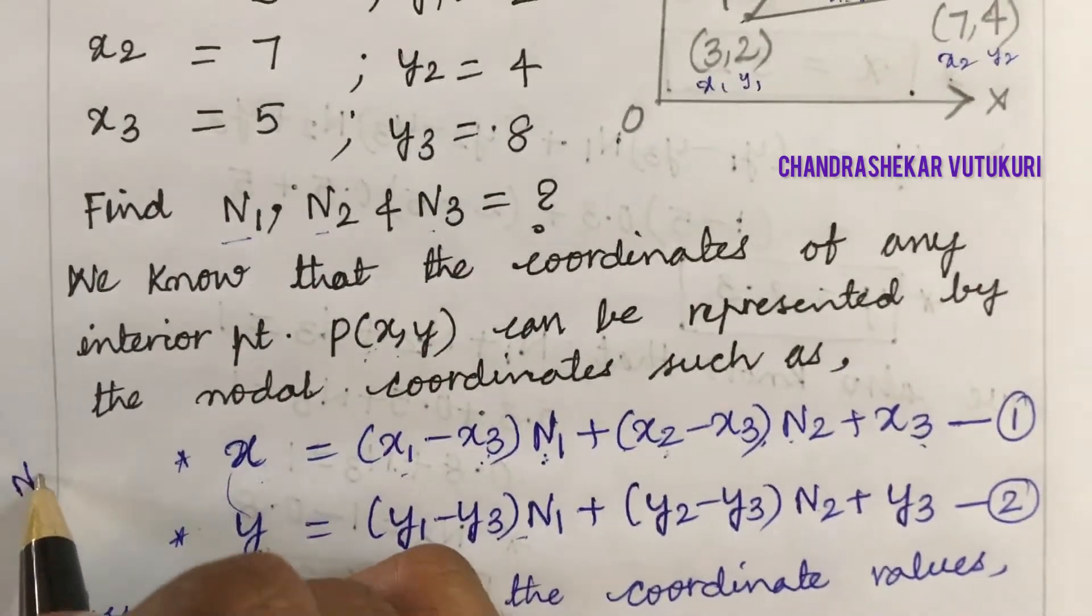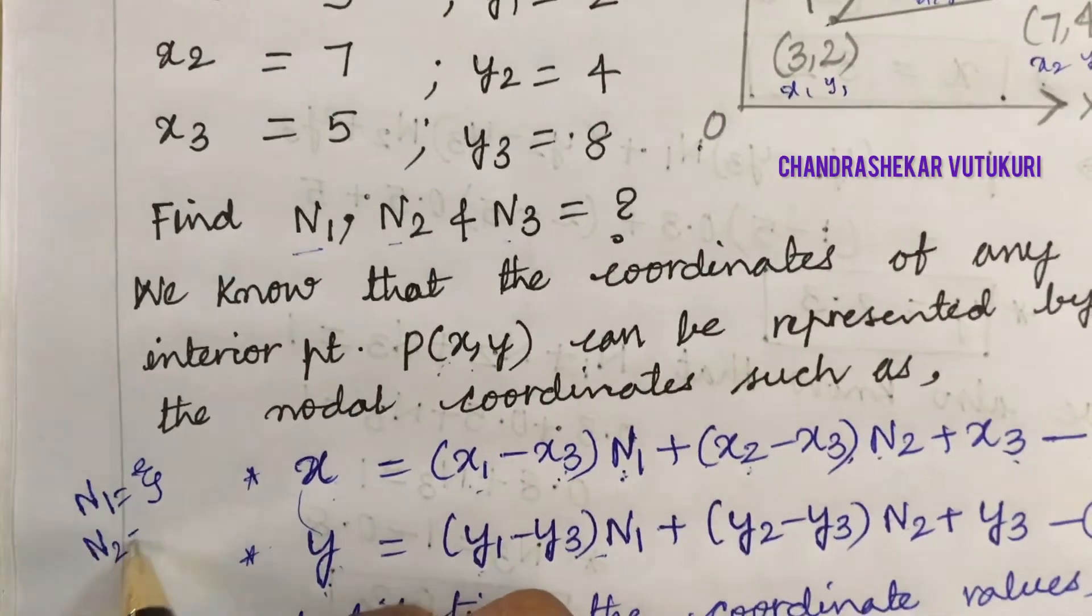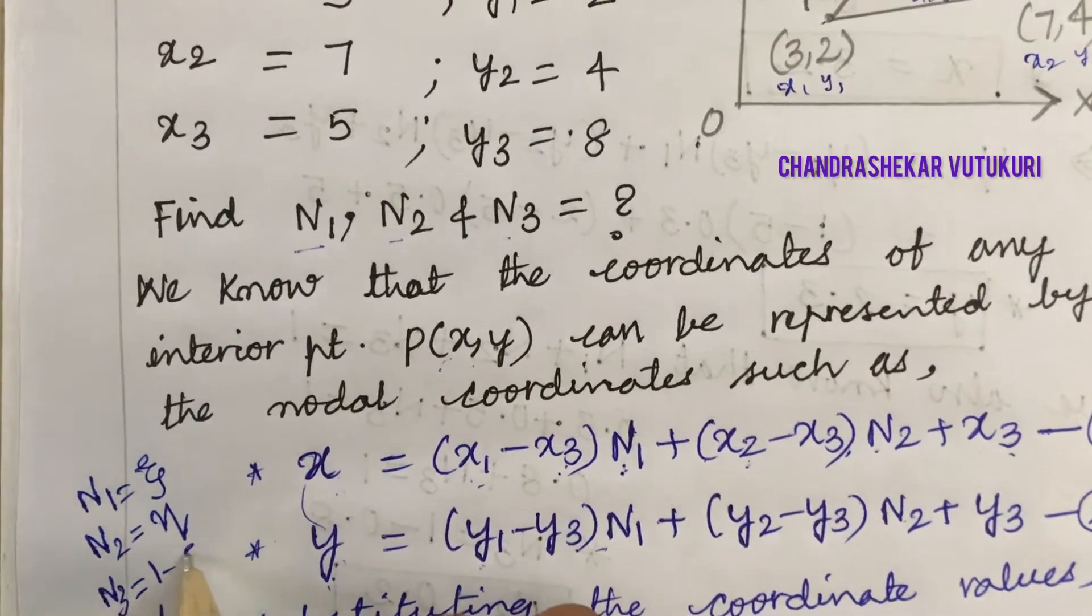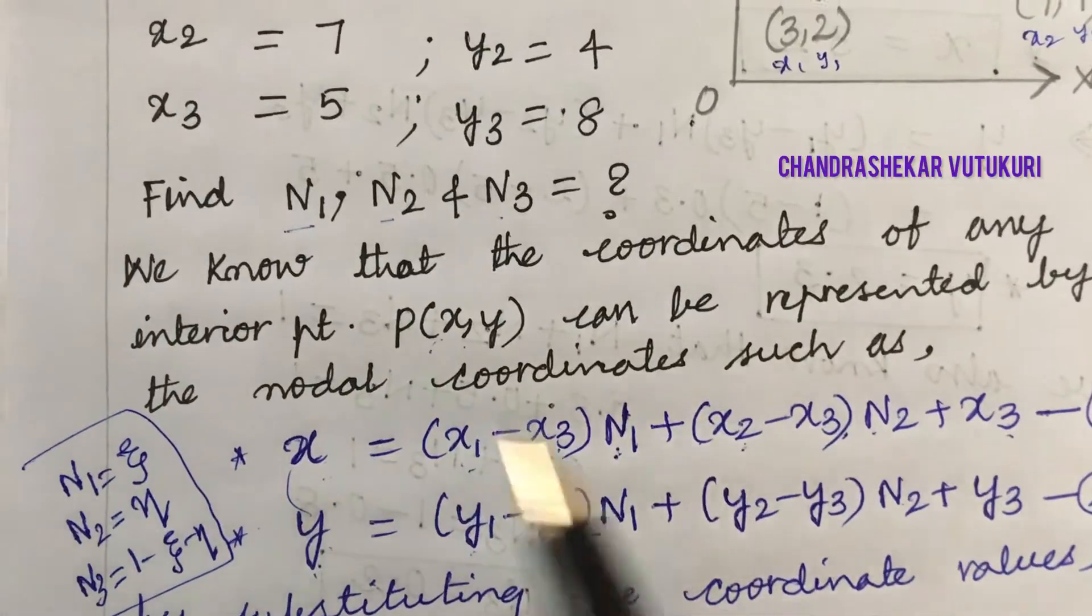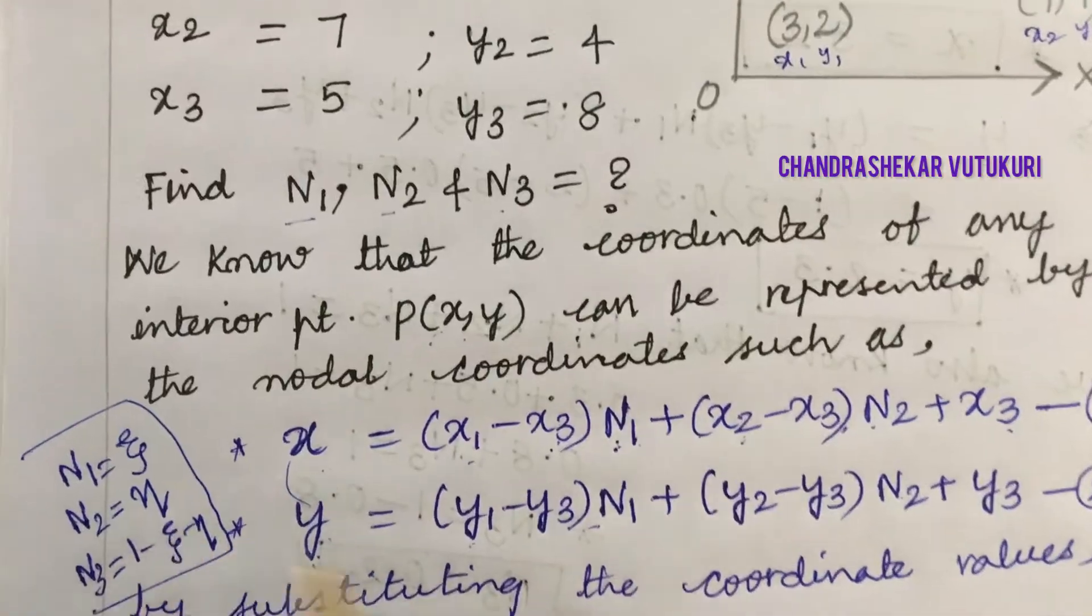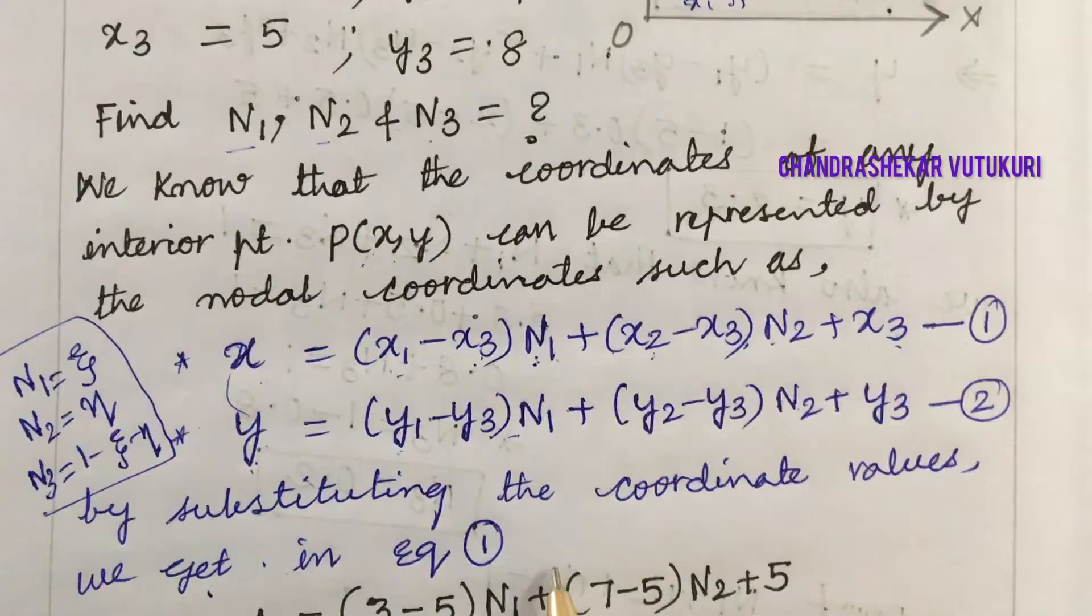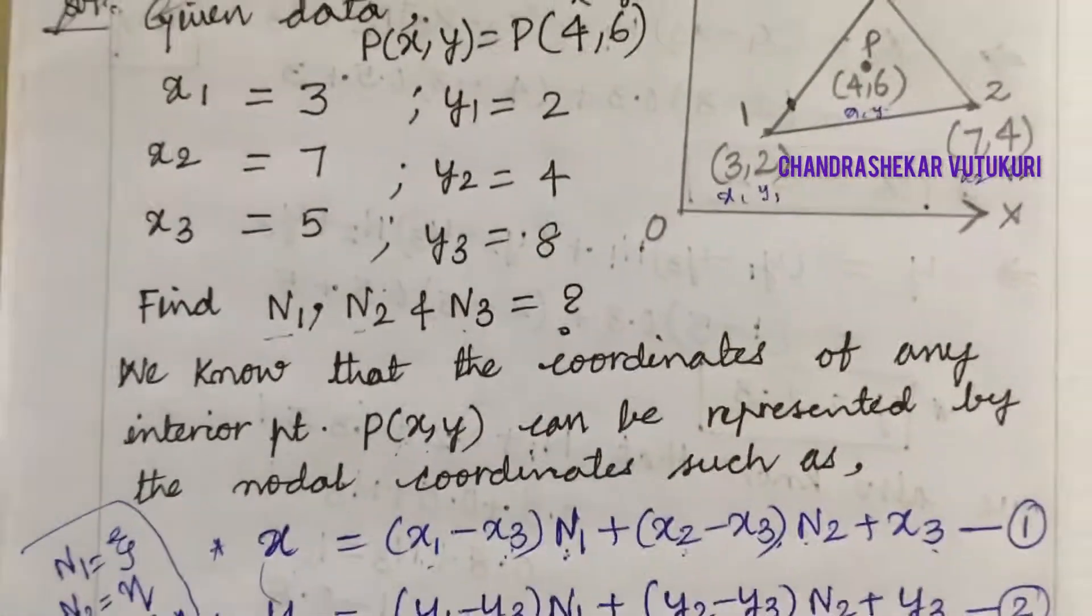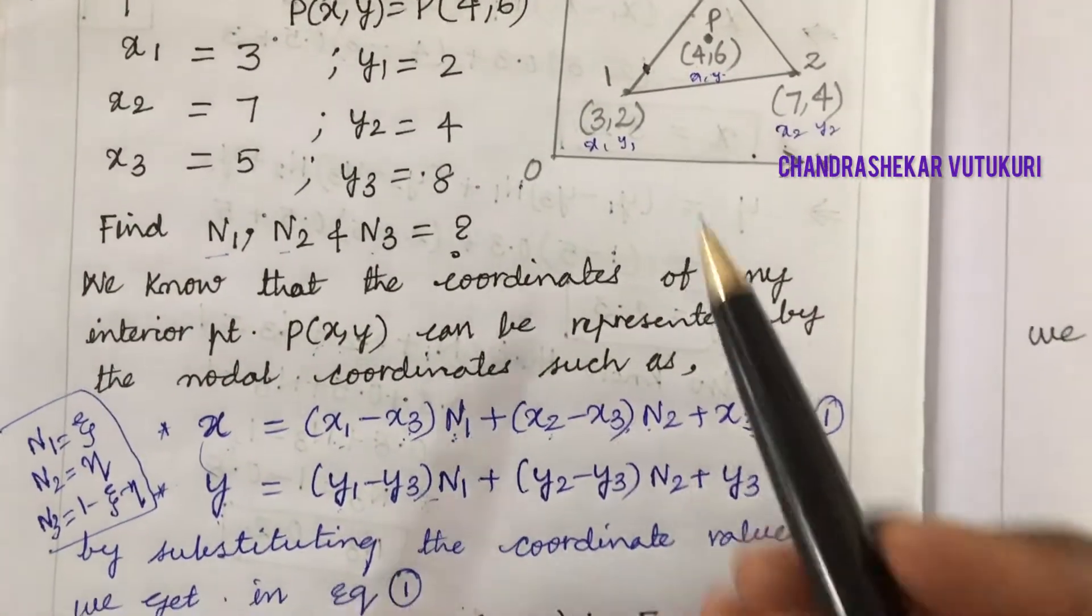In some books, instead of N1 they write zeta, and instead of N2 they write eta. N3 can be read as 1 minus zeta minus eta. It varies from book to book, so don't confuse the notation. By substituting the coordinate values we get equation 1. Please try to work out along with me or take a screenshot so you can work it out easily.